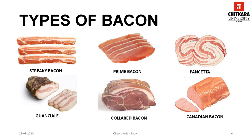If the bacon is only cured and not smoked then it is referred to as green bacon. Next is prime bacon. This is obtained from the belly part but does not have as much fat as streaky bacon. The streaks of the bacon are formed due to the layering of the fat and the meat in the pig's belly.